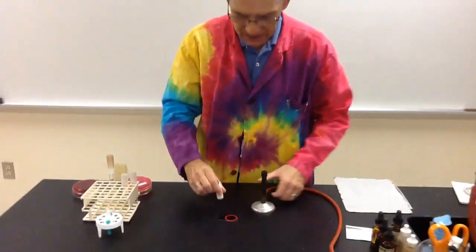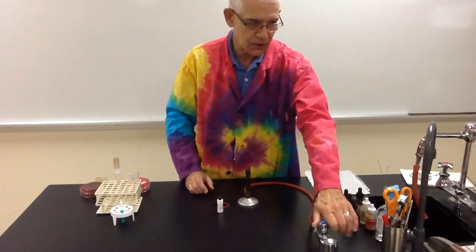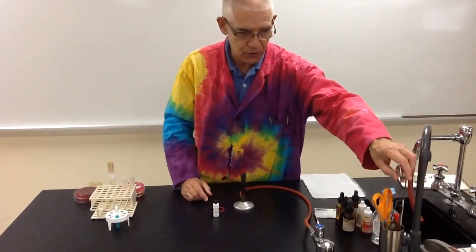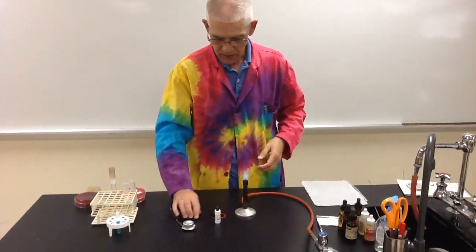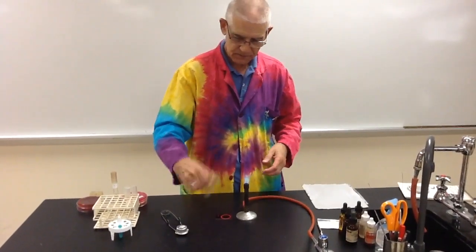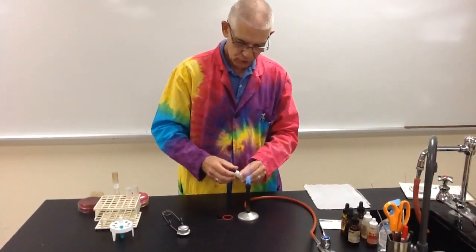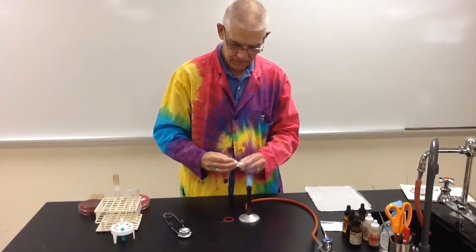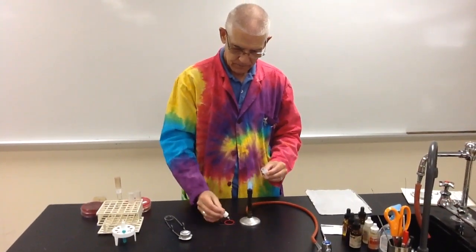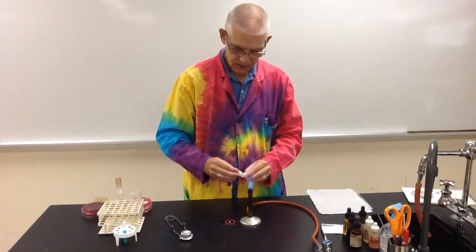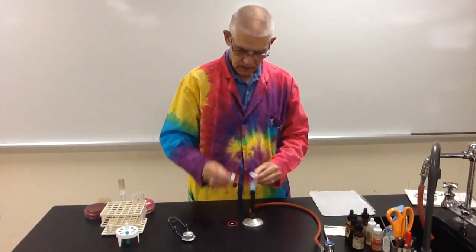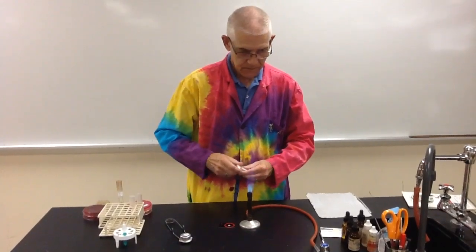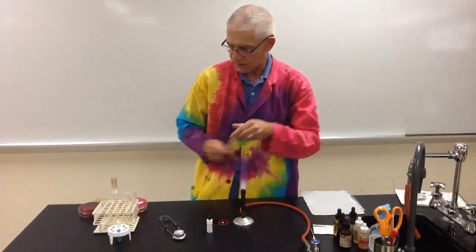The last test that we're going to do is the bead agglutination test. Now, with this particular test, it's specific, the one that we have, to staph aureus. And basically, all we have to do is mix up our beads, add a drop to the reaction card. And then we're going to take some of the, I'll add a little bit more if we have a bubble. Then take some of the bacteria, and add it to the beads, and mix it up.